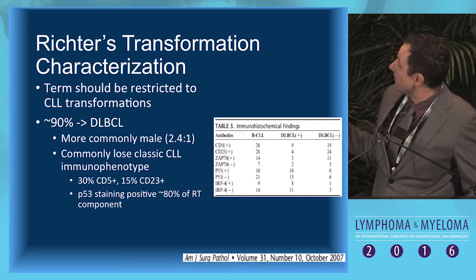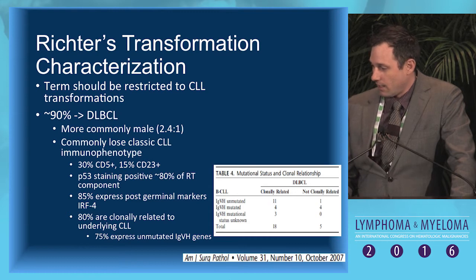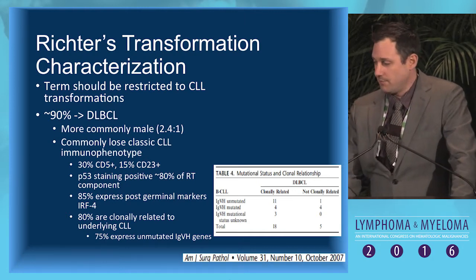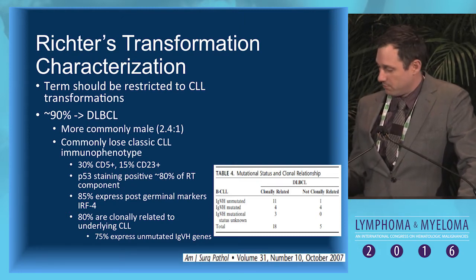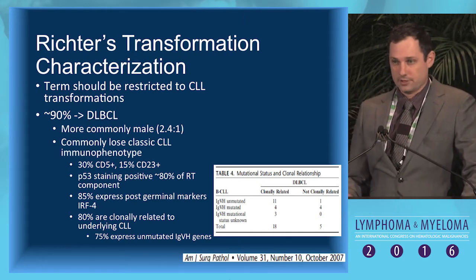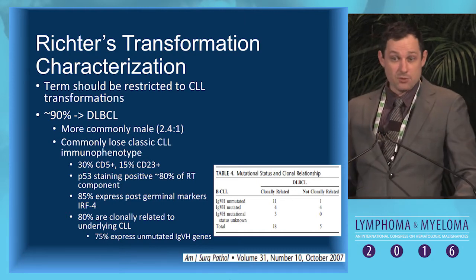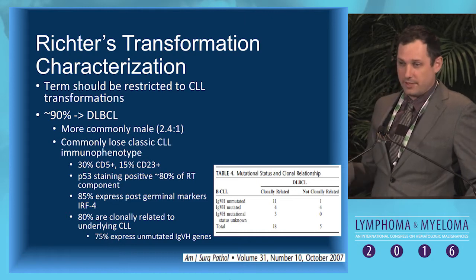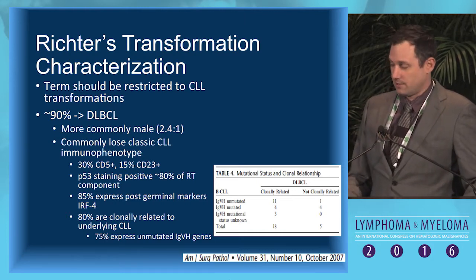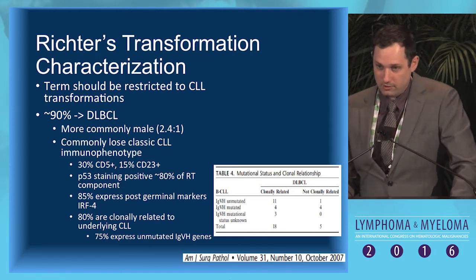Overwhelmingly, 80% of the DLBCLs that are transformed have P53 disruption seen by IHC. About 85 to 90% of these transformations are of the post-germinal center subtype — the ABC (activated B-cell) subtype — and express post-germinal center markers such as IRF4. When looking at clonality, 80% are clonally related to the underlying CLL, and the vast majority of unmutated CLL cases are clonally related, whereas mutated CLL that transforms is roughly 50-50.